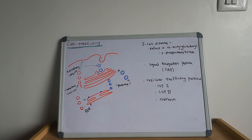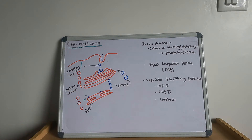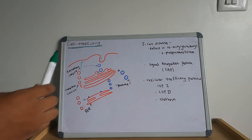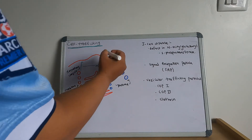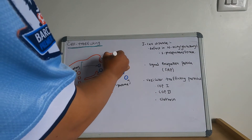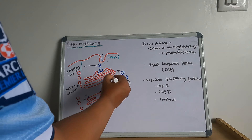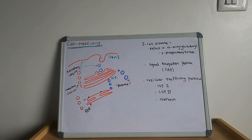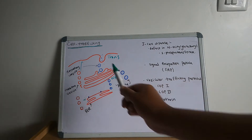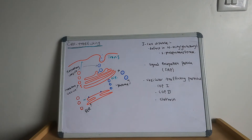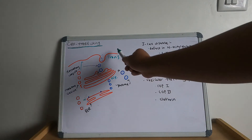The cis face and trans face of the Golgi are distinct regions. The Golgi body serves as the distribution center for proteins and lipids, routing them from the endoplasmic reticulum to vesicles and the plasma membrane.